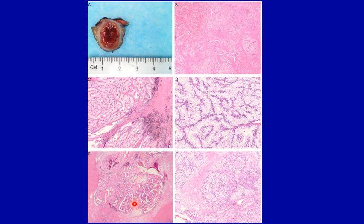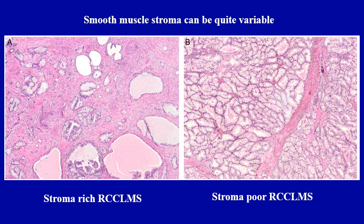These tumors also demonstrated focally prominent papillary morphology in many cases and often had biphasic collapsed acini surrounded by tubules with voluminous clear cytoplasm. Very interestingly, the stroma can be quite variable in this tumor — here is an example of stroma-rich RCC-LMS, while here is an example of stroma-poor RCC-LMS. In our opinion, stroma is not the definitional character of the tumor; rather, it is the epithelial characteristics that are the definitional features.